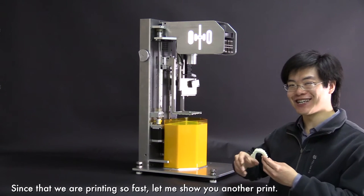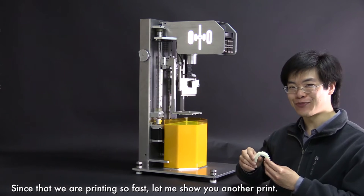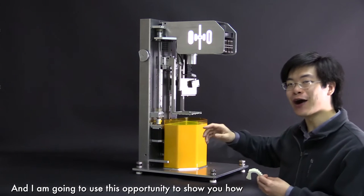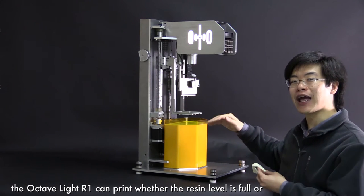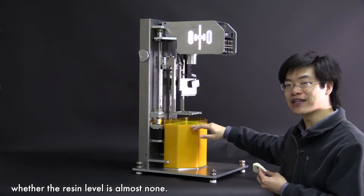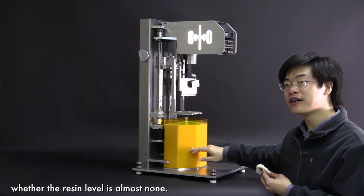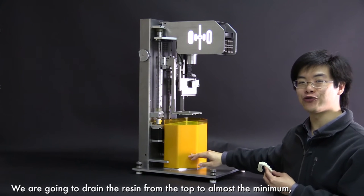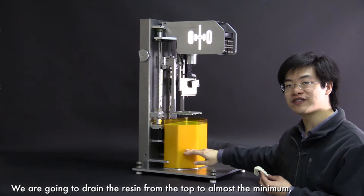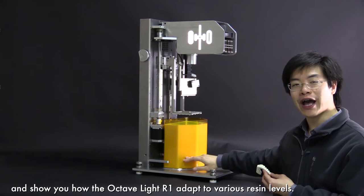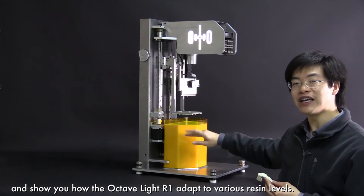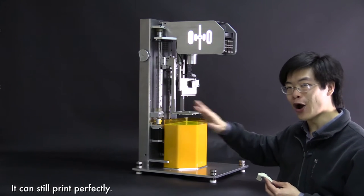Since we are printing so fast, let me show you another print. And I'm going to use this opportunity to show you how the Octav Light R1 can print whether the resin level is full or whether the resin level is almost none. We are going to drain the resin from the top to almost the minimum and show you how the Octav Light R1 can adapt to various resin levels. It can still print perfectly.